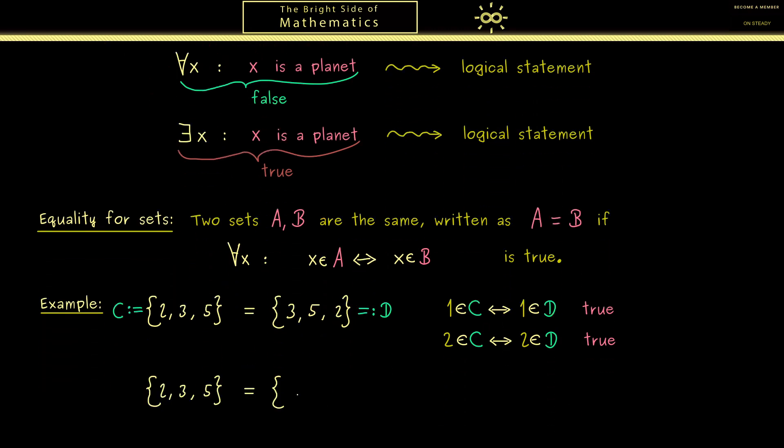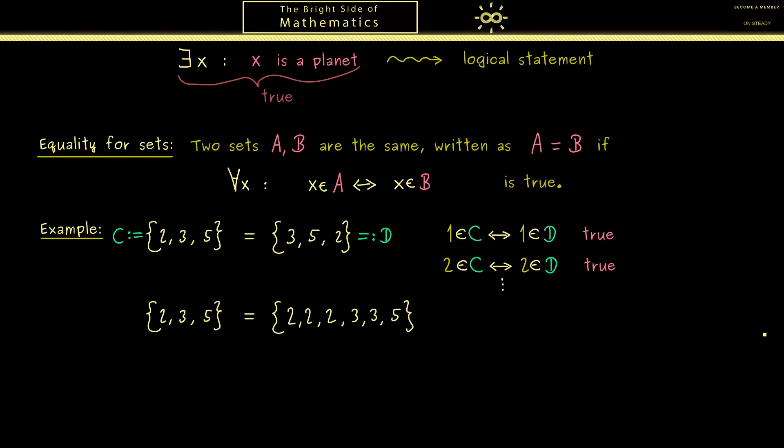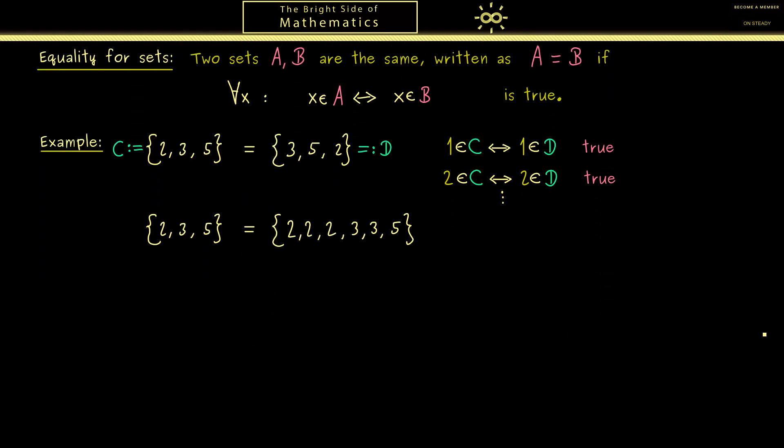A similar example would now be if we repeat some elements. Also here the 2 sets are equal because we can do the same checks as before.